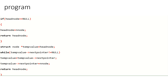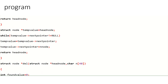If the dictionary contains elements, then a struct node star pointer 'temp' is set equal to the head node to traverse the list. Temp stores the values of the head node. While temp's next pointer is not equal to null, meaning the address field is not null, temp is updated to temp's next pointer to reach the last node.